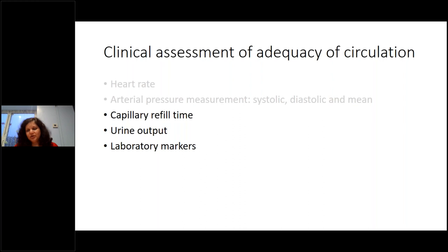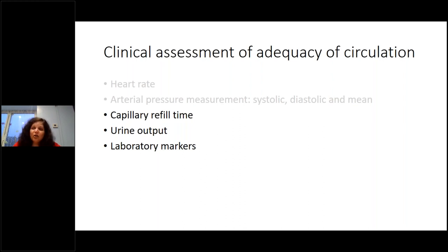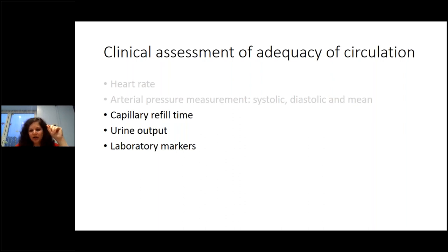Urine output is another important end-organ marker. Preterm babies have high urine output initially due to renal immaturity — very high in the first 72–96 hours. When the kidneys are more mature and urine output drops, that's concerning. We see this in babies with a wide-open duct causing diastolic steal — very high systolic, very low diastolic, and the organs affected are gut and kidneys, with creatinine creeping up and low urine output.